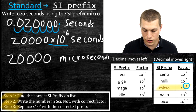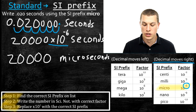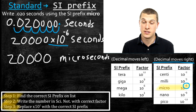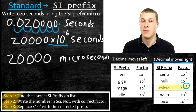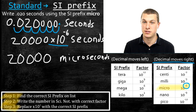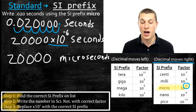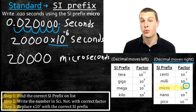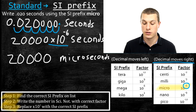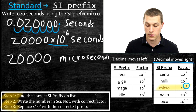We can do a conceptual check here. Twenty thousand is a big number, and that makes sense because we're using microseconds to measure something. If I measure something that's 0.02 seconds long, it should be a lot of microseconds. The fact that we've gotten a big number — twenty thousand — is good, because we should have a big number when using a really small SI prefix like micro.